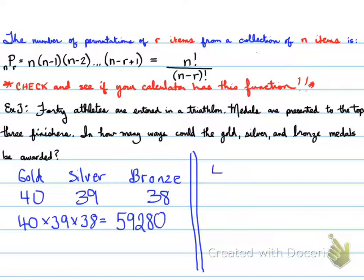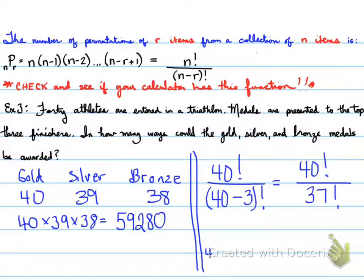Another way to get this answer is by using NPR. We have 40 factorial over 40 minus 3. So 40P3 is what we're looking for. 40 possible athletes choose 3 of them. When we calculate this, this will also end up with 59,280. 40 choose 3.